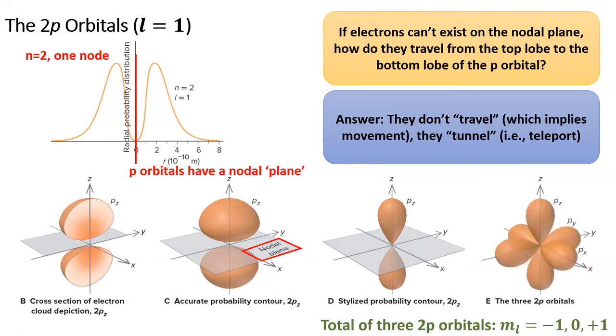There are a total of three 2p orbitals corresponding to m sub l negative one, zero, and positive one. They're oriented at 90 degree angles to each other.